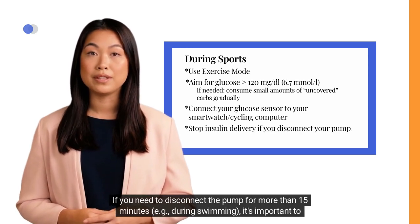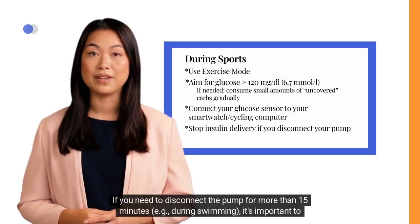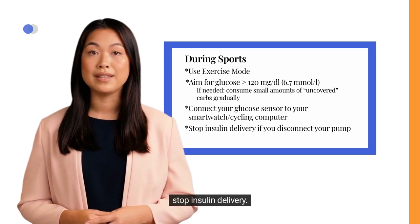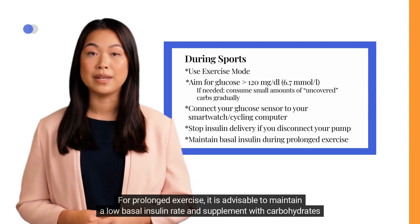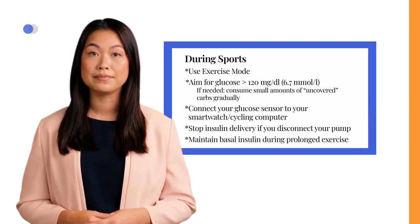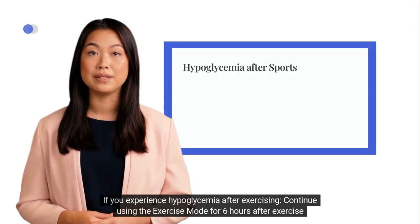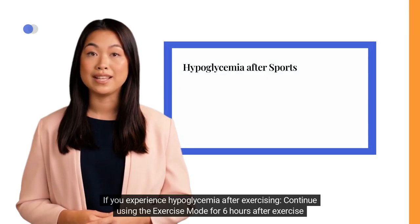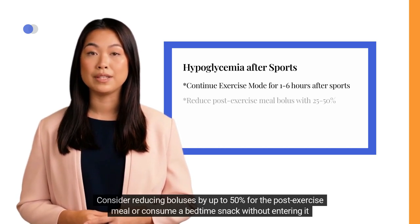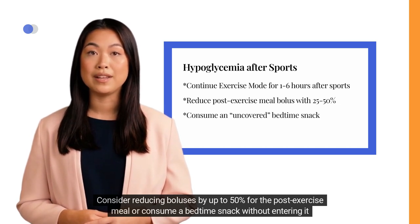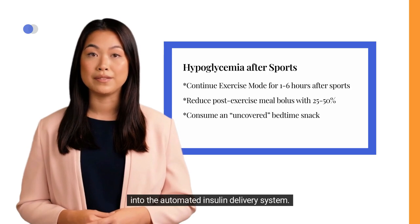If you need to disconnect the pump for more than 15 minutes — for example, during swimming — it's important to stop insulin delivery. For prolonged exercise, it is advisable to maintain a low basal insulin rate and supplement with carbohydrates to prevent ketone development. If you experience hypoglycemia after exercising, continue using the exercise mode for 6 hours after exercise or throughout the night. Consider reducing boluses by up to 50% for the post-exercise meal or consume a bedtime snack without entering it into the automated insulin delivery system.